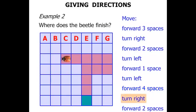Then the beetle turns to the right. Watch carefully. Finally, forward two spaces. One, two. So the beetle finishes at the point C. Next.